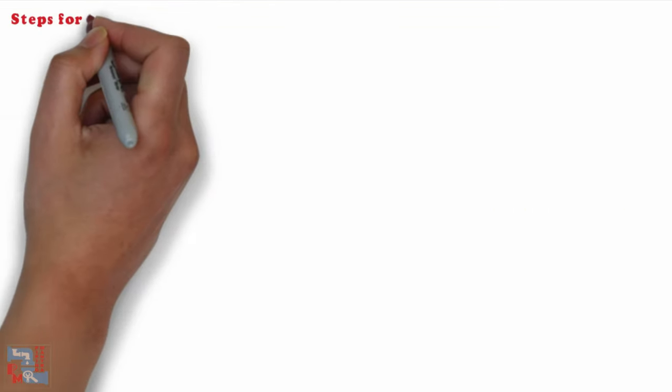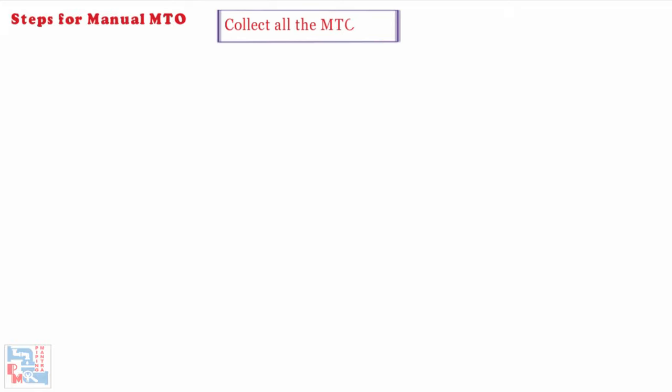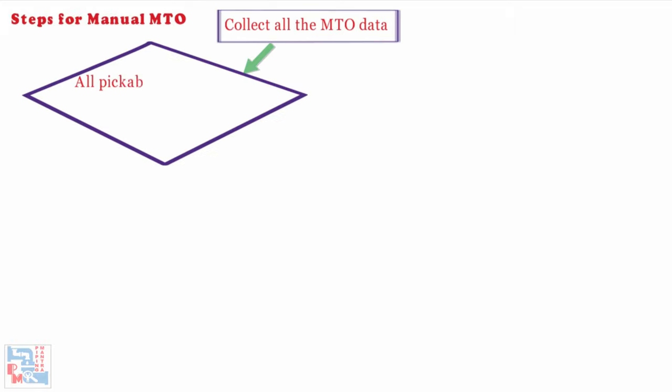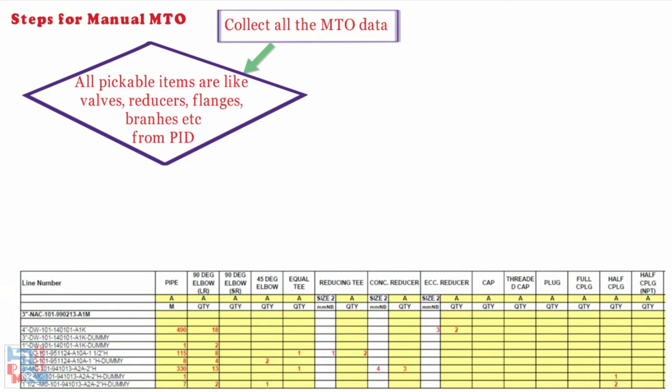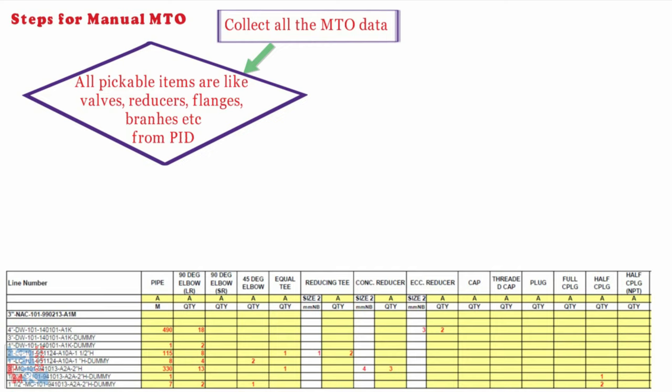For manual MTO preparation, first collect all the MTO data. Then all pickable items — such as valves, reducers, flanges, branches, etc. — are entered in the MTO format Excel file. All entries must be taken against a specific line number. In case a line number is not marked on the P&ID, it has to be assumed by adding a suffix A or B with the main header line. Specs should be mentioned as per the piping material specification.